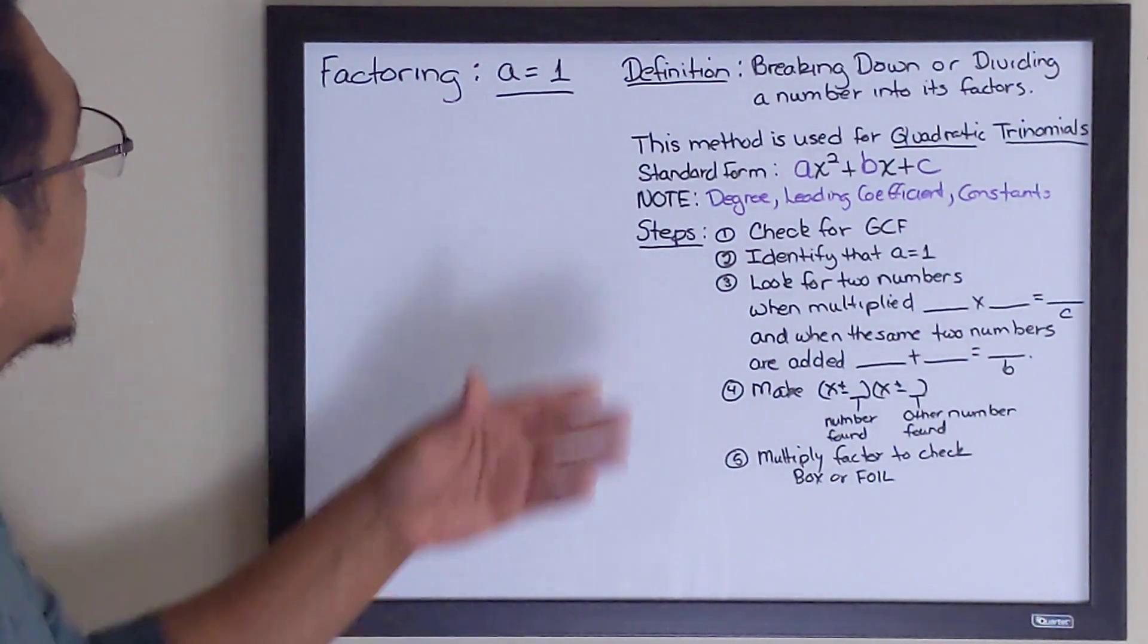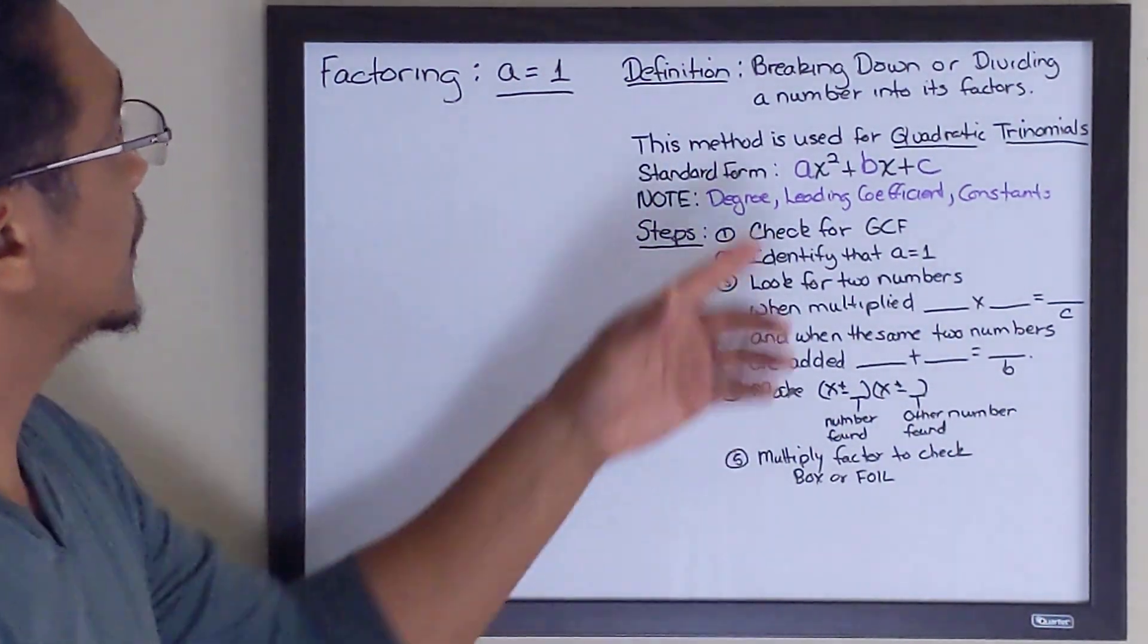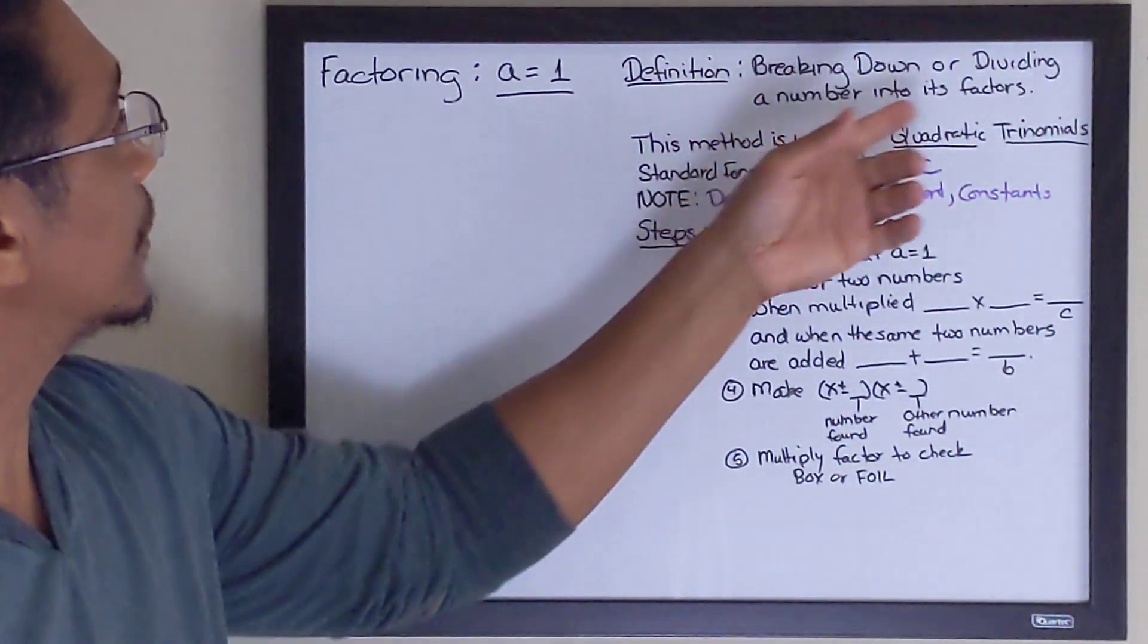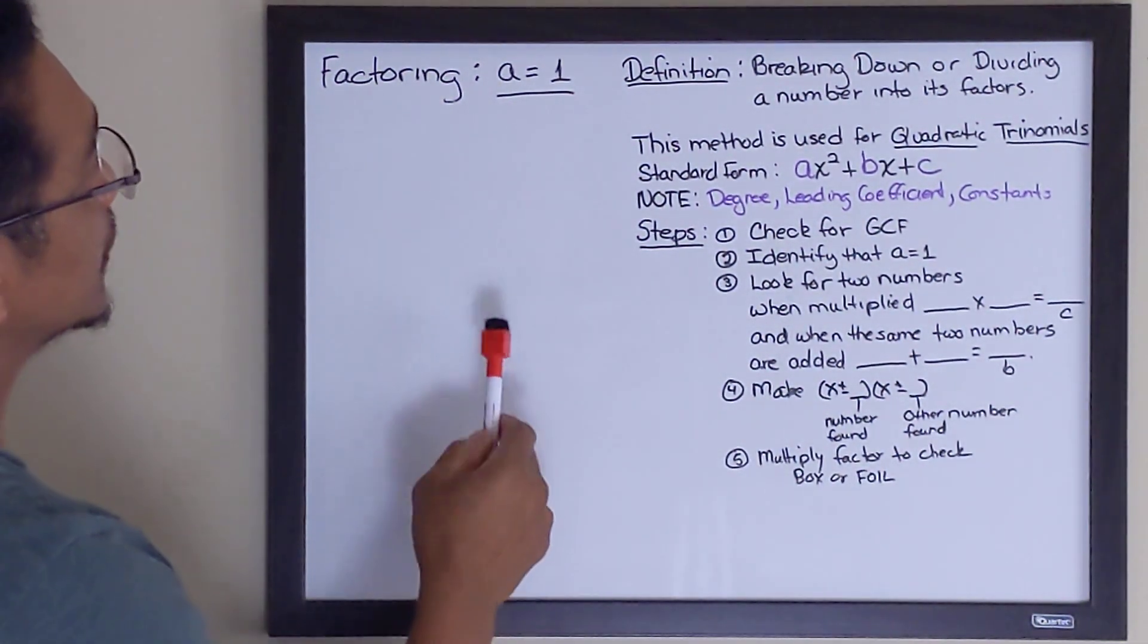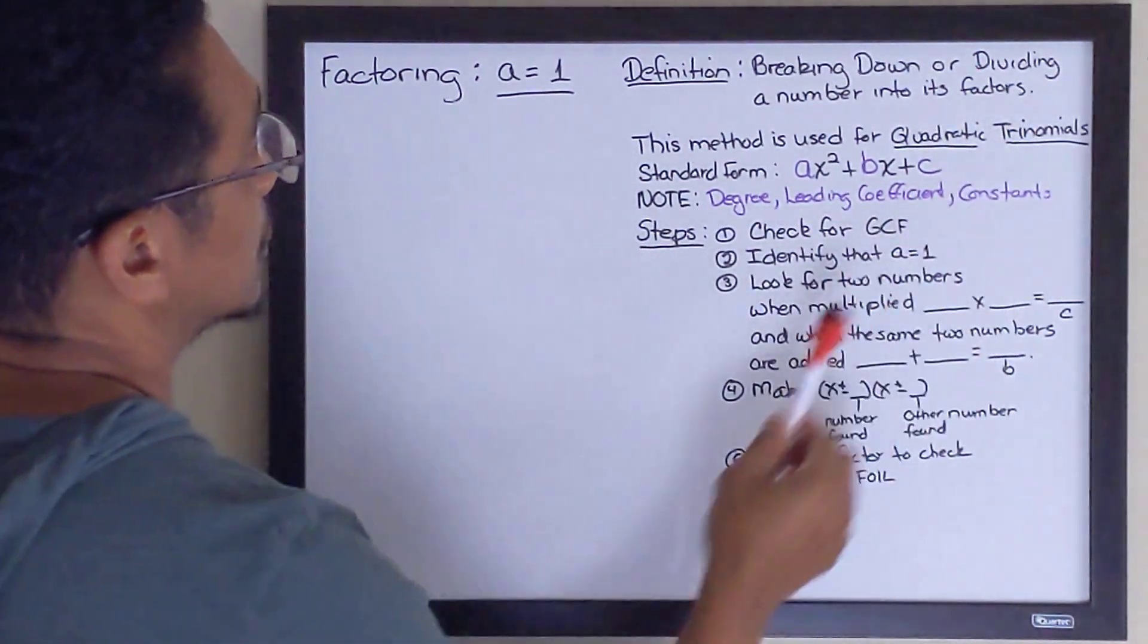Before we get started, let's talk about the definition of factoring. It is breaking down or dividing a number into its factors. Now, this particular method, a equals one, is used for quadratic trinomials.